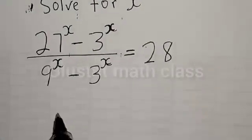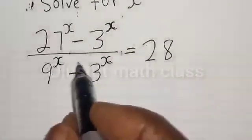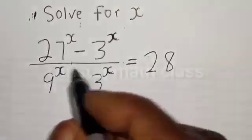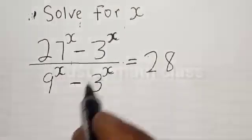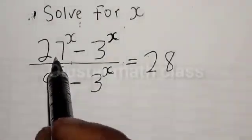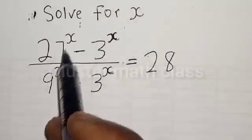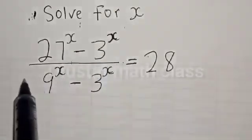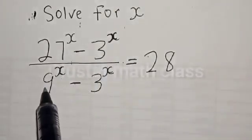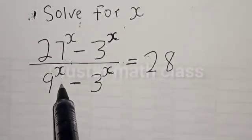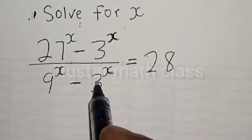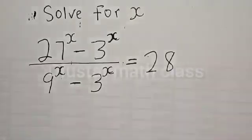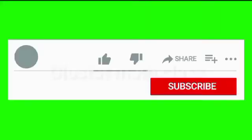Hi everyone, welcome to my class. In this class, we want to find the value of s from this given equation: 27 raised to power s minus 3 raised to power s, divided by 9 raised to power s minus 3 raised to power s, is equal to 28.